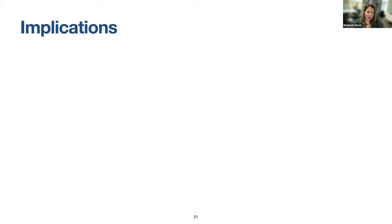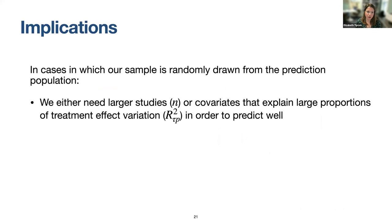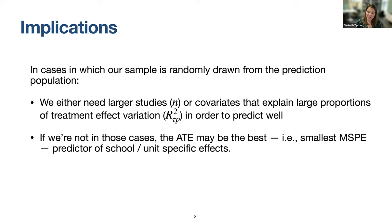The implications of this first part are that if our sample is randomly drawn from the population, we need larger studies than we currently have, or we need covariates that explain a large share of variation. If we're not in those cases, the average treatment effect itself from our sample may actually be the best predictor of unit-specific effects. But at the same point, prediction intervals are quite wide — if there's a lot of variation in effects, the range could include negative and positive values for schools.